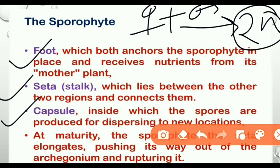The sporophyte has three parts: foot, seta, and capsule. The foot is a structure that helps in receiving nutrients from the mother plant, i.e., the gametophyte, because the gametophyte is an independent plant body and the sporophyte is completely dependent on it. The seta connects the foot and capsule together. The capsule is a spore-bearing structure which contains spores and elaters. At the time of maturity, the spores burst out from the capsule and grow into a new Marchantia thallus.